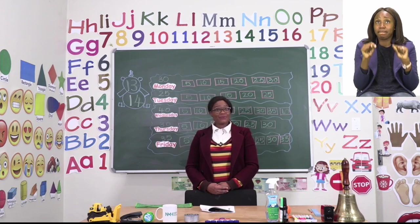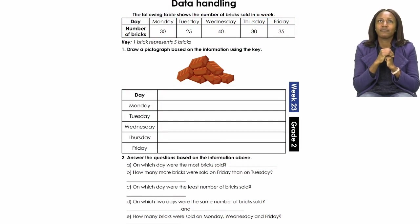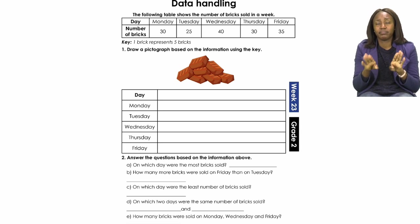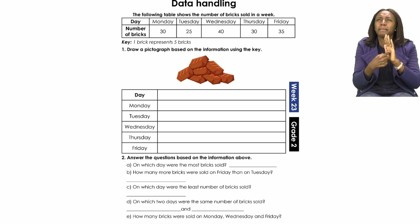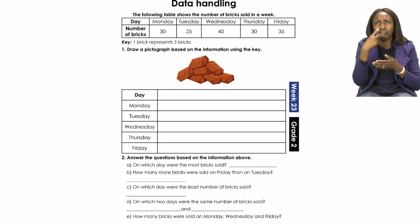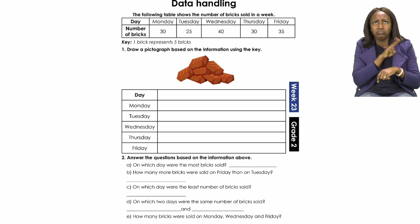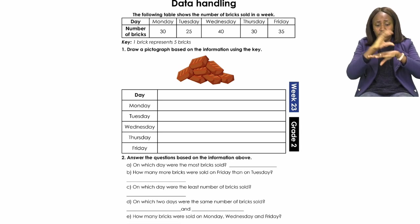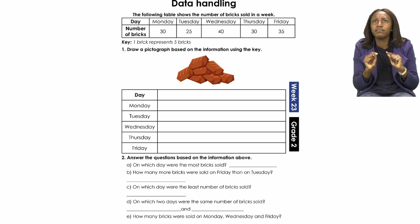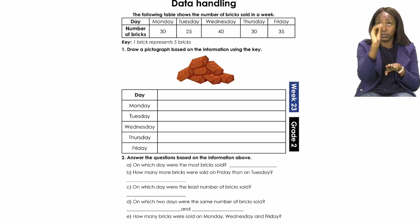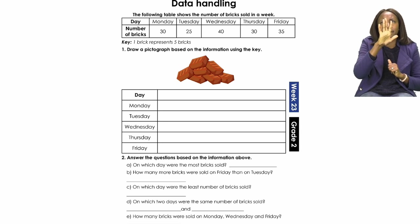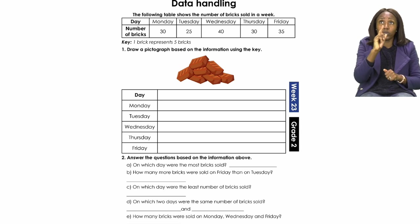Now boys and girls, let's all go to page 13. On page 13, we are going to be doing data handling. It's going to be our job to read this information and then make a pictograph out of it. The table shows the number of bricks sold in a week: Monday 30, Tuesday 25, Wednesday 40, Thursday 30, and Friday 35. Remember, one brick that we draw is representing five bricks, so we are counting in fives for each brick.